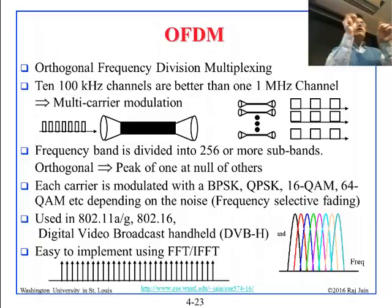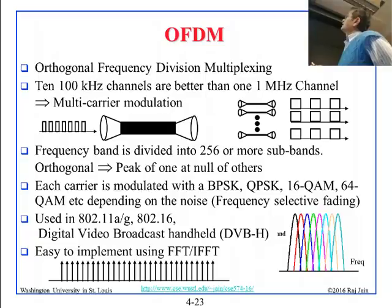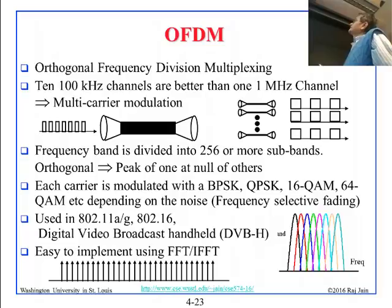If you are given a 1 megahertz channel, instead you use 10 channels of 100 kilohertz each. Things will be much better using 10 channels than using one. On a 1 megahertz channel, the bits would be very small because you are sending at a very high speed — say, 1 megabit per second — so each bit would be 1 microsecond.